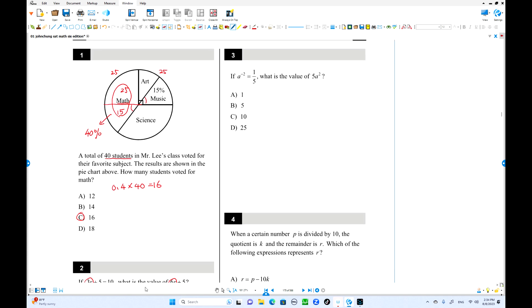Number three: a to the negative 2 equals 1 over 5. a to the negative 2 is 1 over a squared, that equals 5. From here, a squared is 5. This is 5, so 5 times 5 is 25, that's the answer.